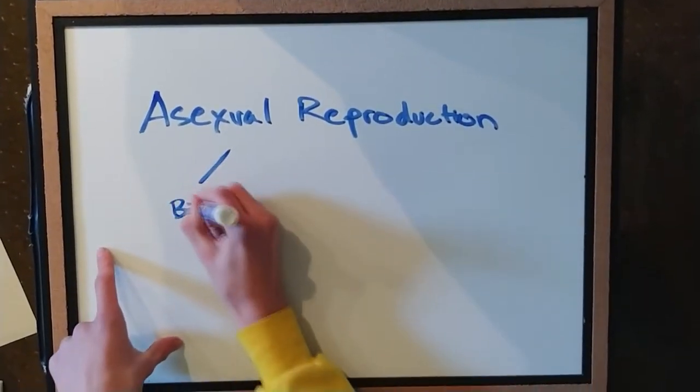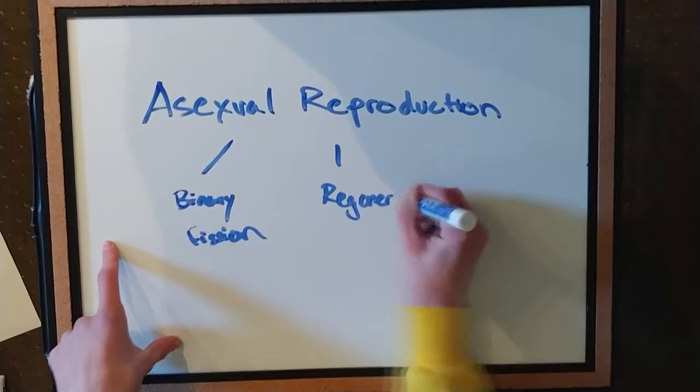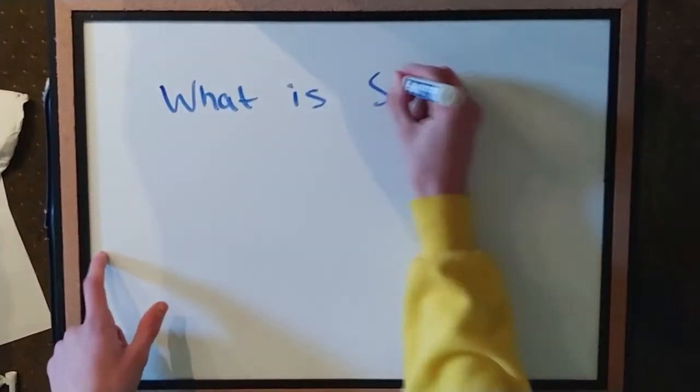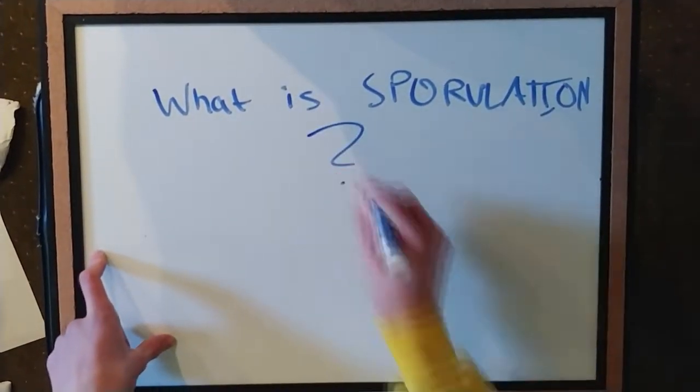There are many types of asexual reproduction that cells undergo, including binary fission, regeneration, and sporulation. But what exactly is sporulation? This is the question that will be answered in this educational video.